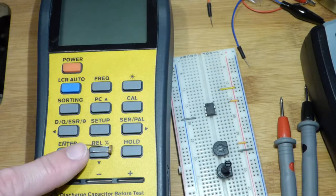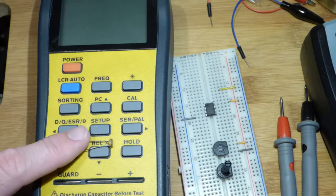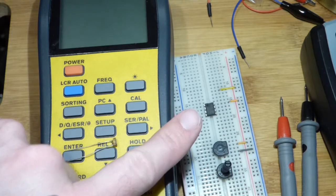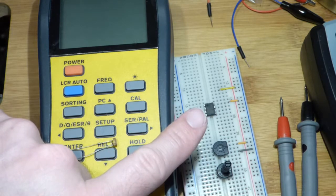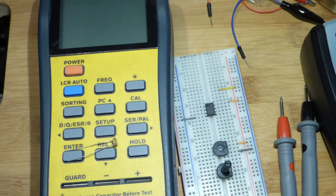Alright so now in this video we're going to use this light dependent resistor, photoresistor sometimes called, to control the comparator.